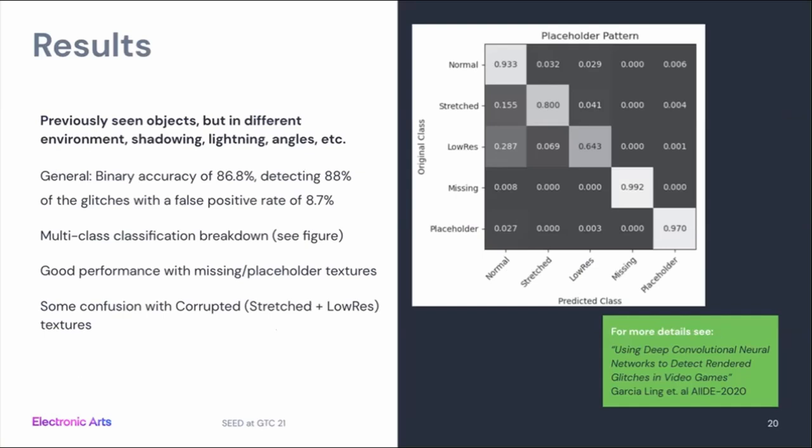On results: the model is really good at finding placeholder and missing textures, but not as good at finding low resolution textures — which is somewhat expected, since even in the Jira database, human playtesters sometimes mislabel normal textures as low resolution. So it's also hard for humans to assess whether a texture is low resolution or intended to look that way. The results show very promising performance at finding visually obvious bugs like missing and placeholder textures — bugs that human players would also easily notice — while leaving things that aren't really visible to players anyway.